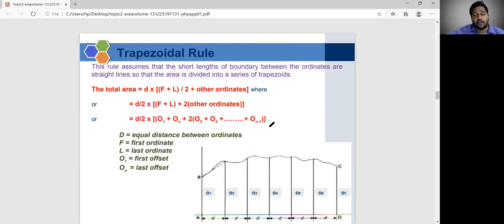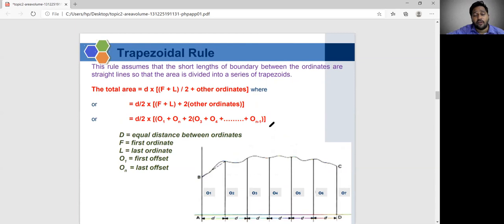How to calculate the total area? By dividing the number of trapezoidals, we can find by using this formula. That is, total area equal to that D, that D is the distance between the ordinates, into F plus L, that is first ordinate plus last ordinate divided by 2, plus other ordinates. Will give you the value.